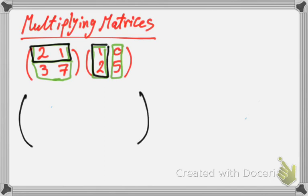2 multiply by 1. 2 multiply by 1 is 2. And then, 1 multiply by 2 is 2. And we add them.